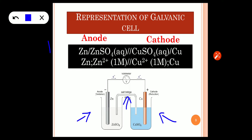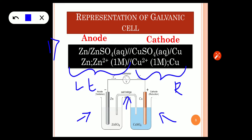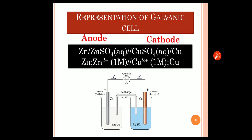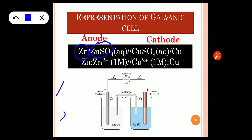The first rule: whenever we represent a galvanic cell or any type of cell, we have to write anode on the left hand side and cathode on the right hand side — that is, anode is written first then followed by the cathode. The second rule: when we write the anode, metal is written first then followed by the electrolyte. In the case of anode, the metal is zinc and the electrolyte is ZnSO4, and both are separated using a single vertical line or semicolon.